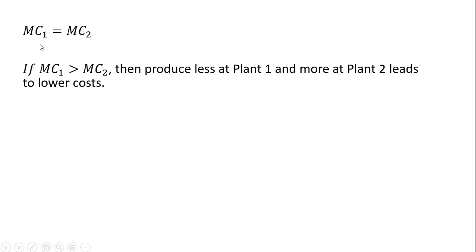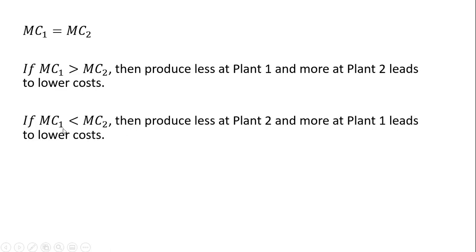In shorthand, the marginal cost of production at plant one should equal the marginal cost of production at plant two. If the marginal cost at plant one is greater than the marginal cost at plant two, then we should produce less output at plant one — after all, it's more costly to produce that last unit at plant one than plant two — and we should produce more output at plant two. This will lead to lower cost of production, and vice versa: if marginal cost at plant one is less than at plant two, it makes sense to produce less at plant two and more at plant one, where it's cheaper.